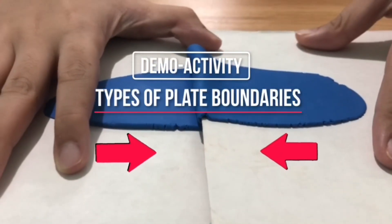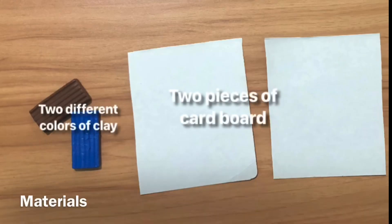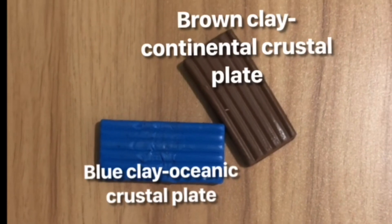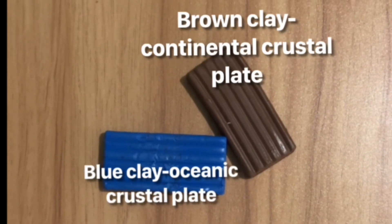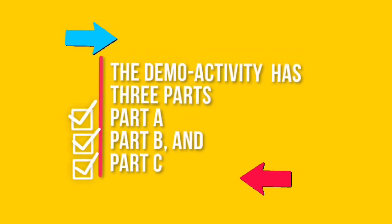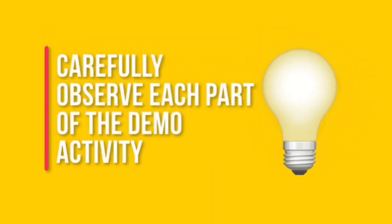Demo Activity on Types of Plate Boundaries. We will use two different colors of clay and two pieces of cardboard — brown for continental plate and blue for oceanic plate. The cardboard and clay represent the Earth's lithospheric plate. The demo activity has three parts: Part A, Part B, and Part C. Carefully observe each part of the demo activity.